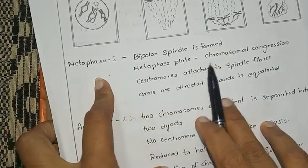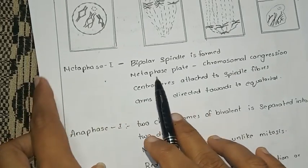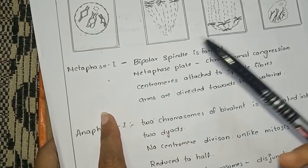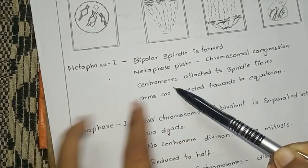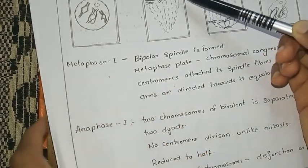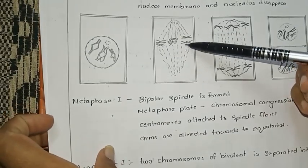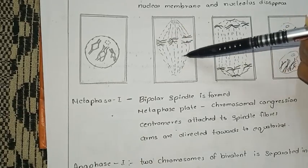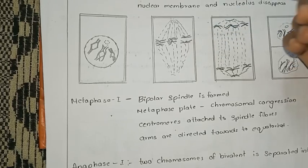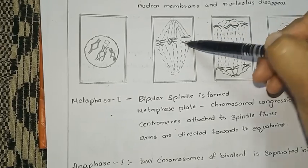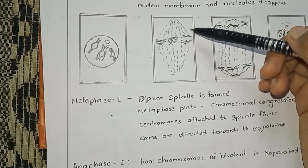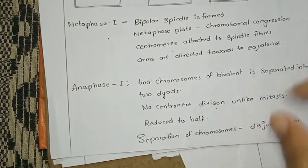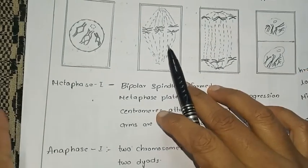This is Metaphase 1. Metaphase 1 differs from mitotic metaphase. We can find two homologous chromosomes aligning on the spindle apparatus. This involves the spindle and the centromere.